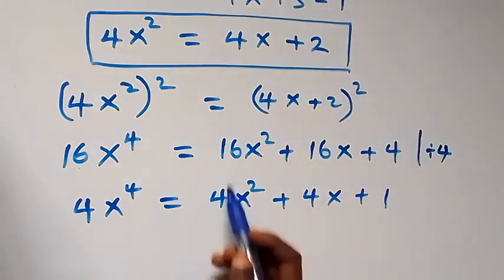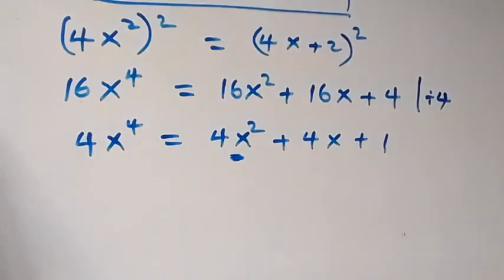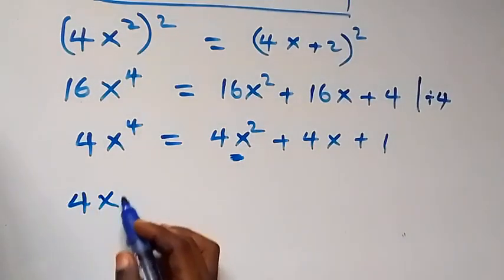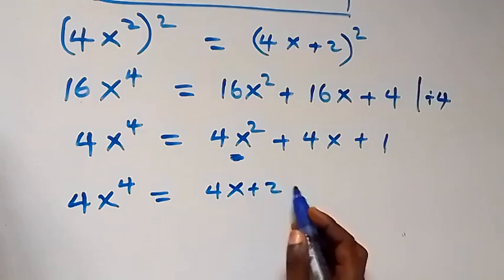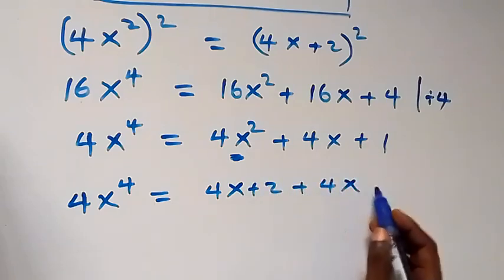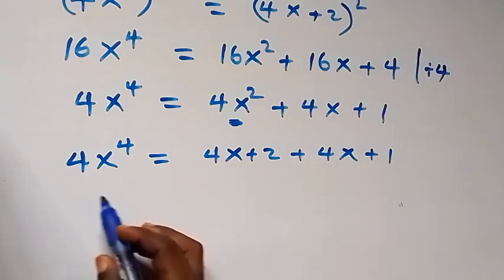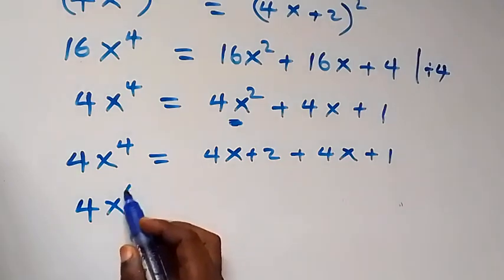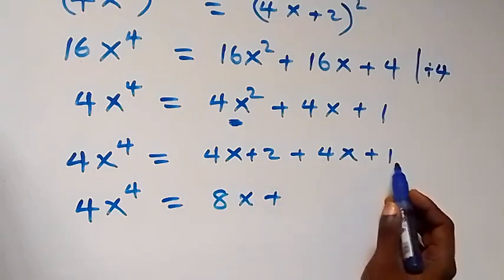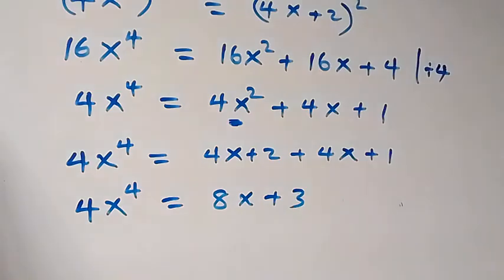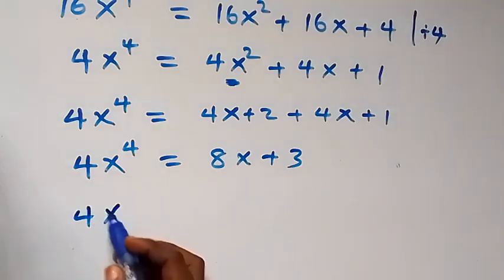Since we have 4x² here, we can replace it with what we have, which is 4x plus 2. So 4x⁴ equals (4x plus 2) plus 4x plus 1. Collecting like terms: 4x plus 4x gives 8x, so 4x⁴ equals 8x plus 3.